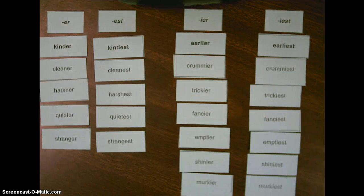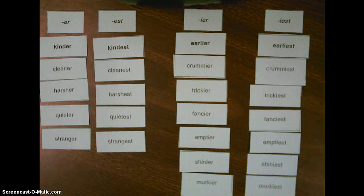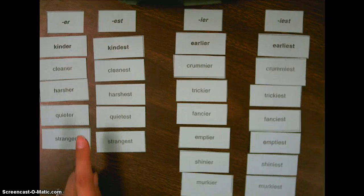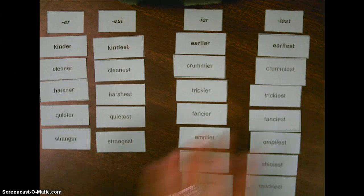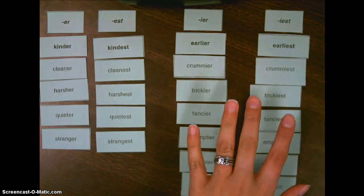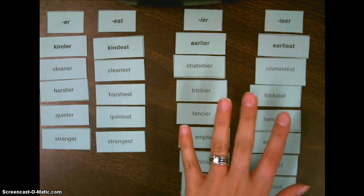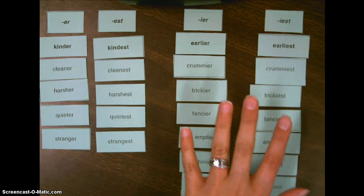Go ahead and sort the rest of your words as pairs into the correct category. Now, you should have your words sorted into four different categories. The words where the base word does not change the spelling when you add the suffix E-R and E-S-T. And then over here, we have the ones where the base word does end in a Y and we change that Y to an I before we add the ending.